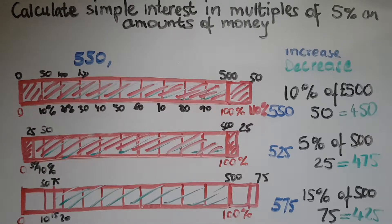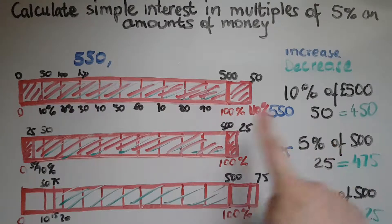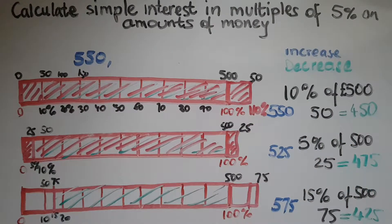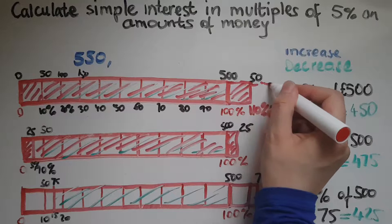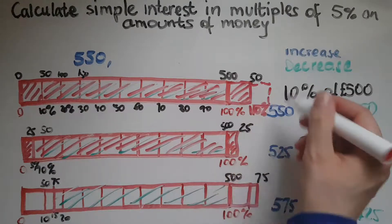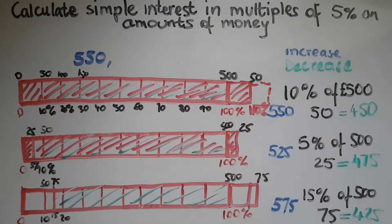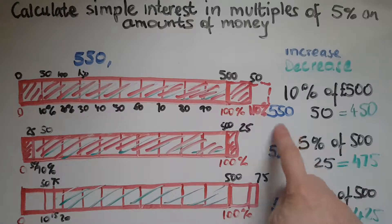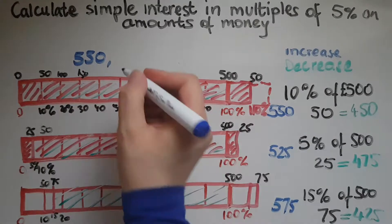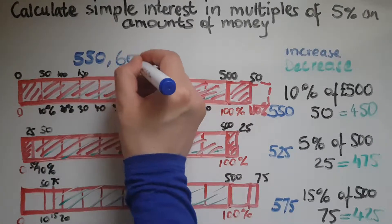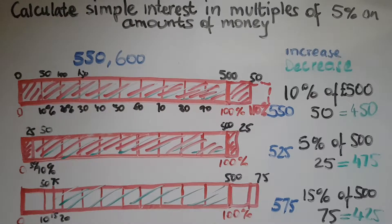Then the next year, you're given another 10%, so this continues to expand. Add another £50, that makes £600. At the end of year two, you'd have £600.